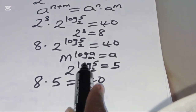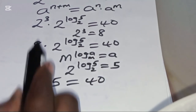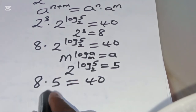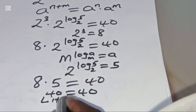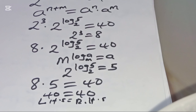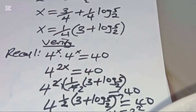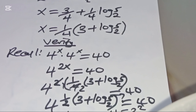Substituting, 8 × 5 = 40, which equals 40. The left-hand side equals the right-hand side, which affirms that the value of x = (1/4)(3 + log₂5) satisfies the equation. Kindly follow the steps, like this video, and subscribe.